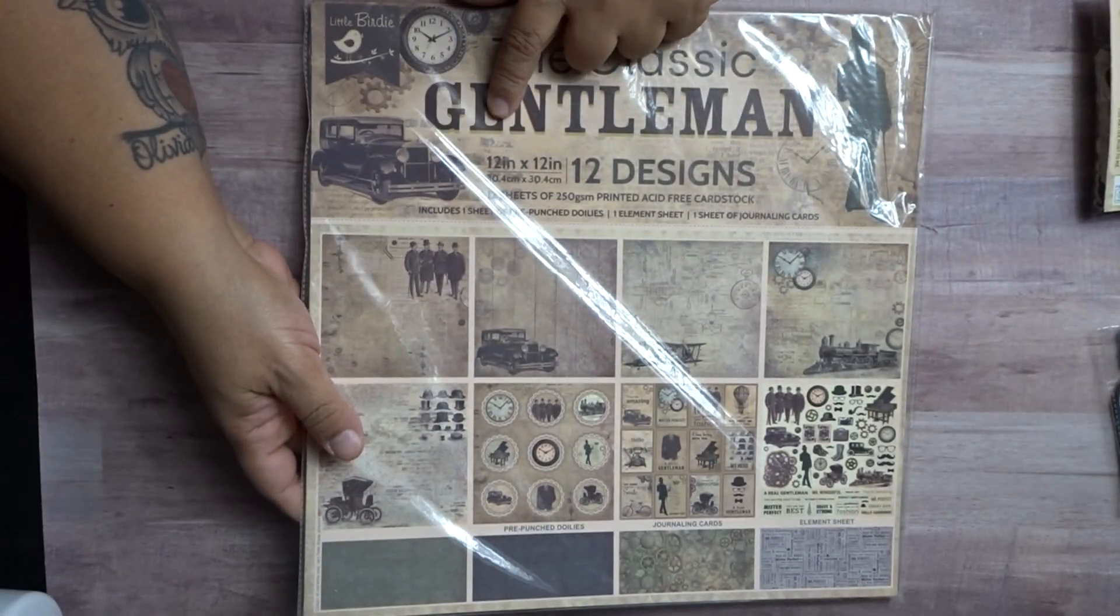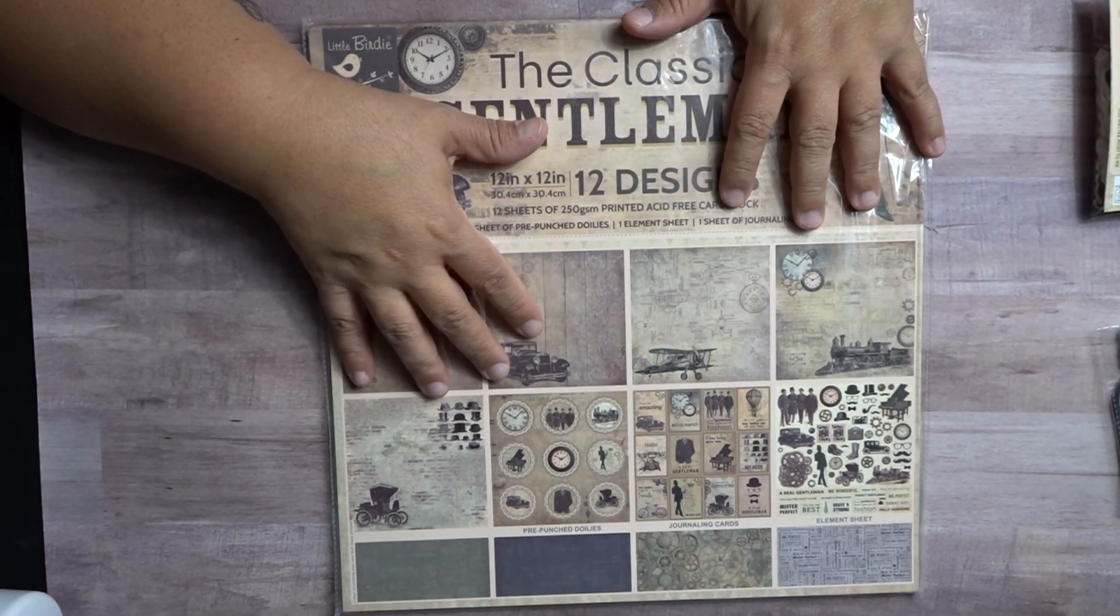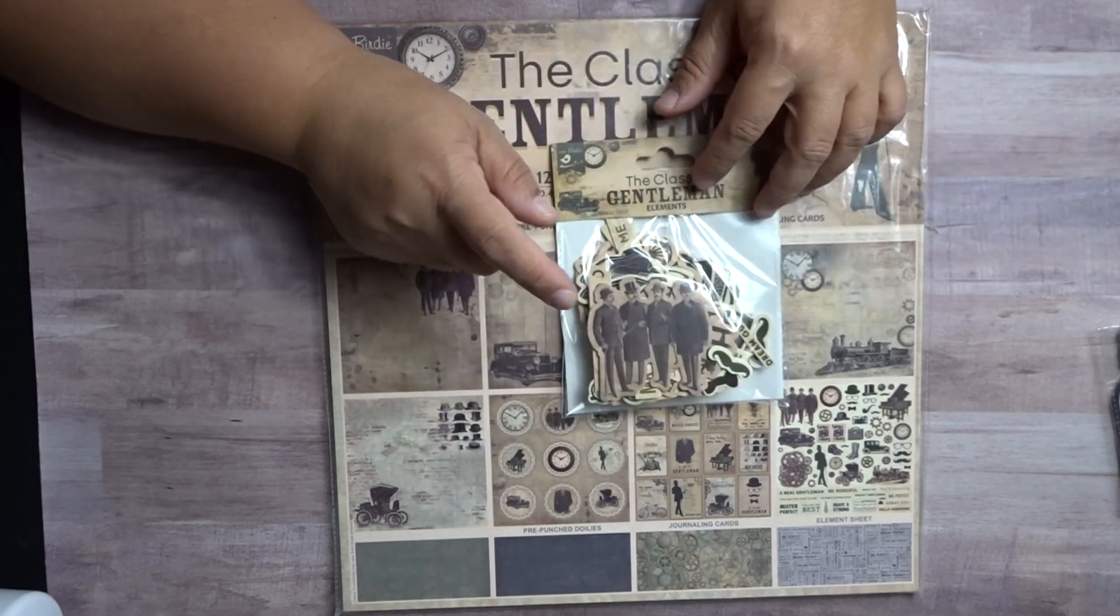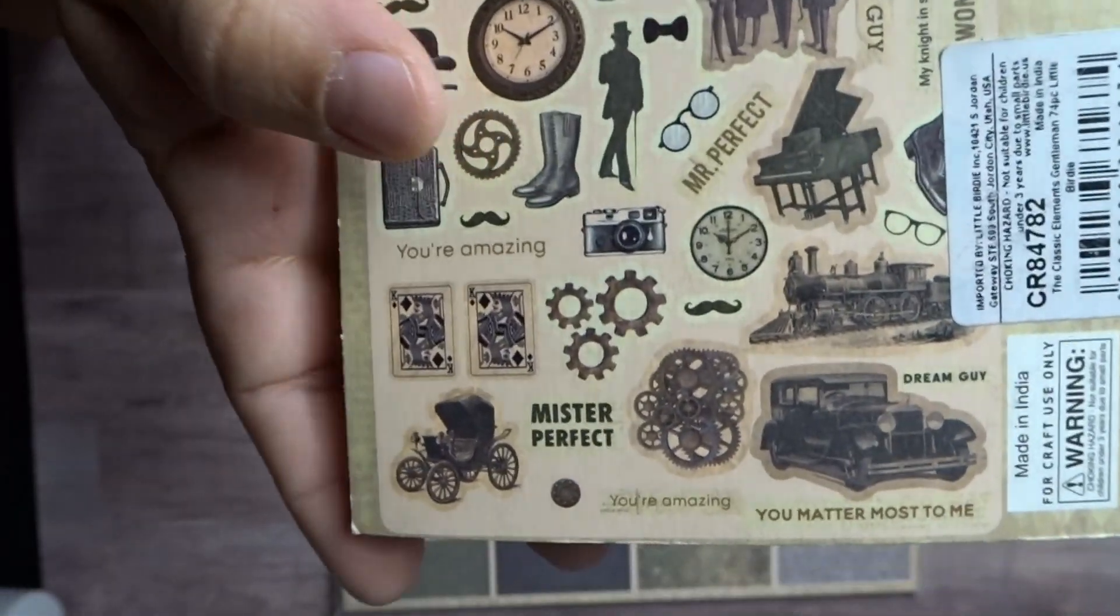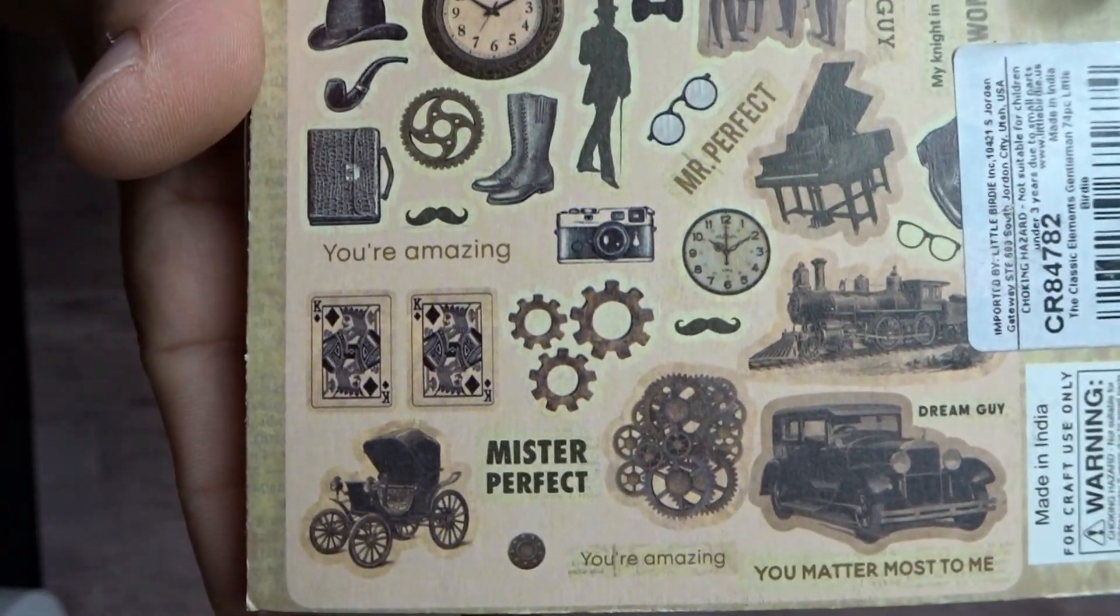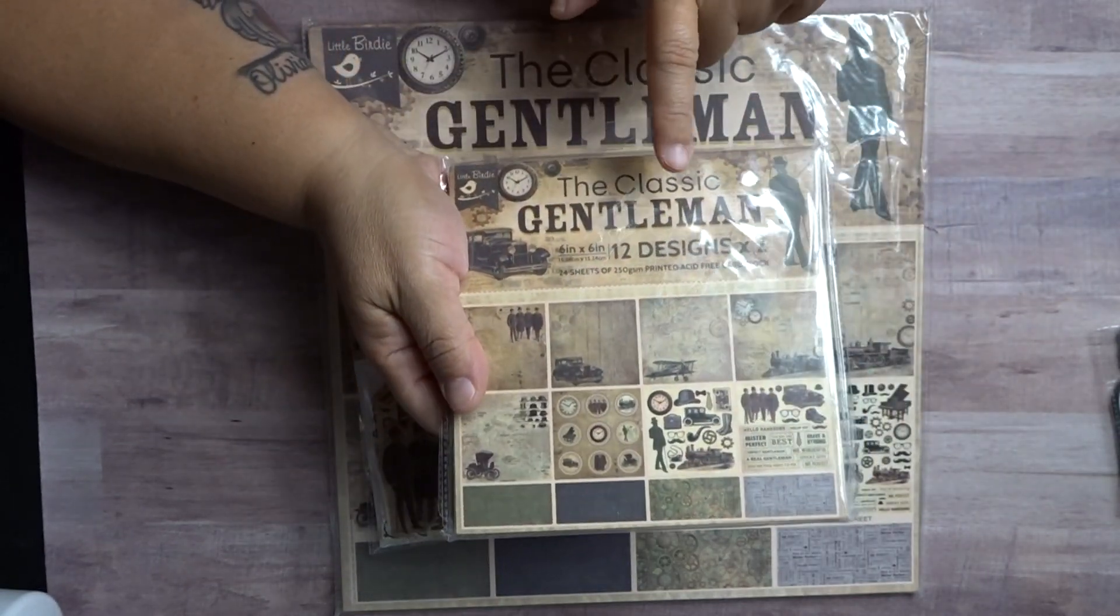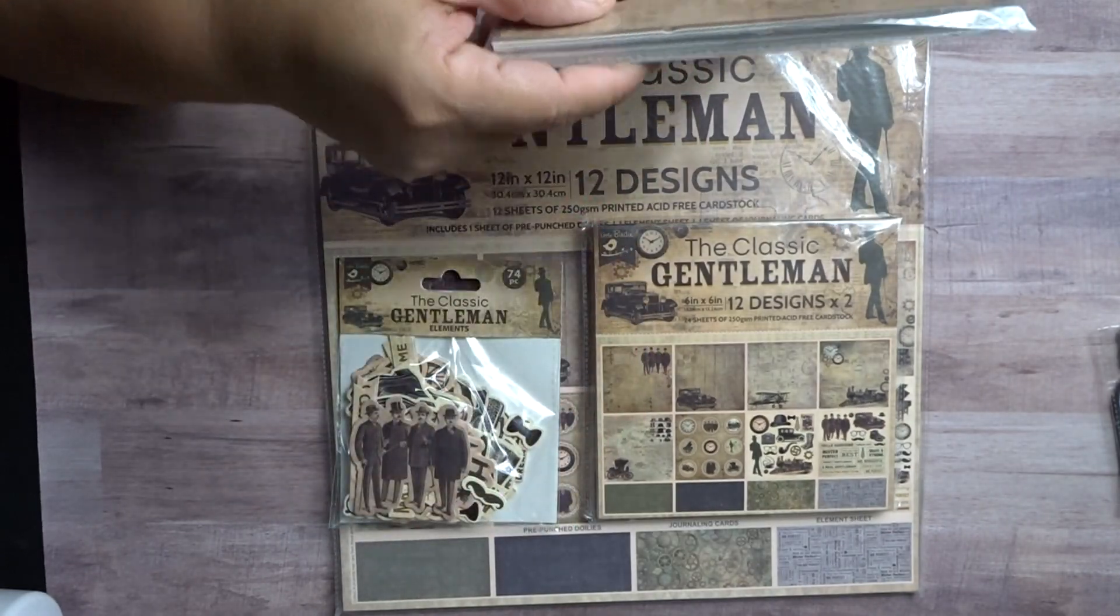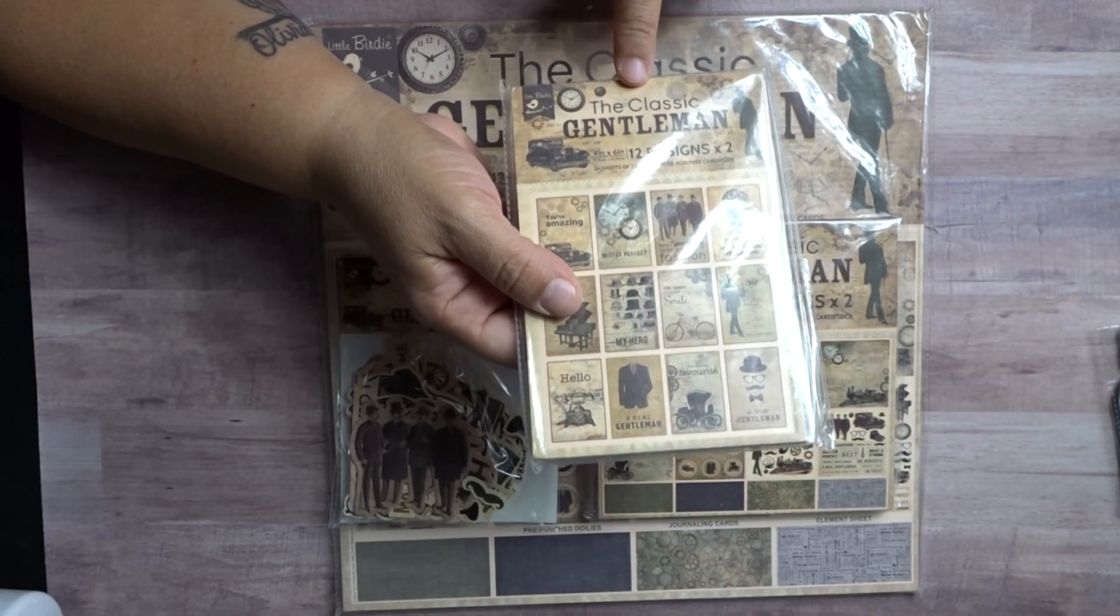So, I got the 12x12 paper for this. And the thing is, you can use black cardstock. You can use craft cardstock with it. Or even beige. Then, I got the ephemera pieces that went with it. These are some of the ephemera pieces here. See? Those. And then, I picked up the 6x6. Kind of like what I did with the... And then, these were the 4x6 journaling cards.